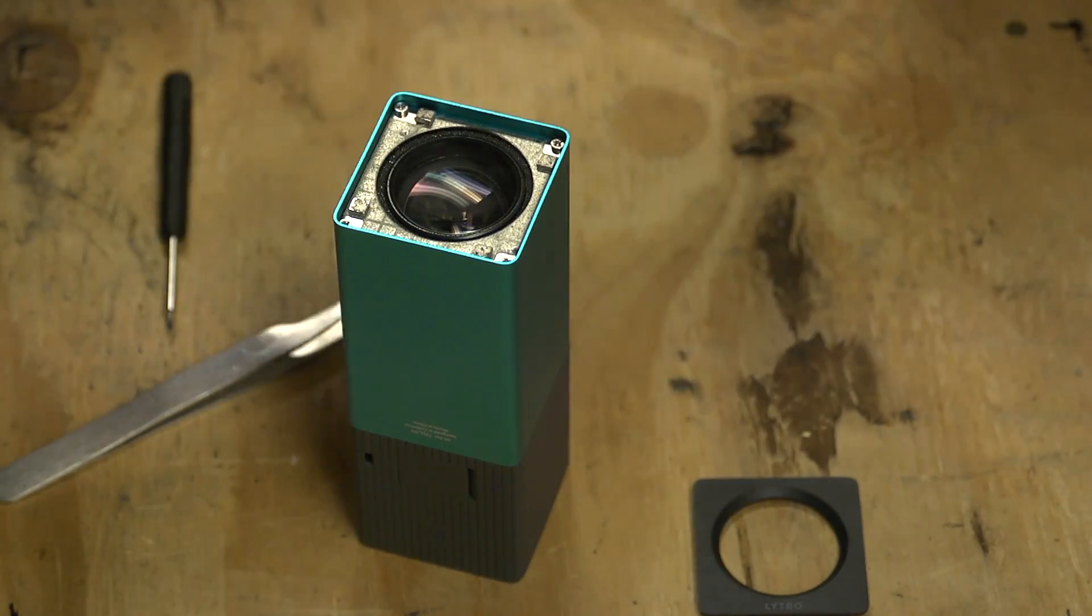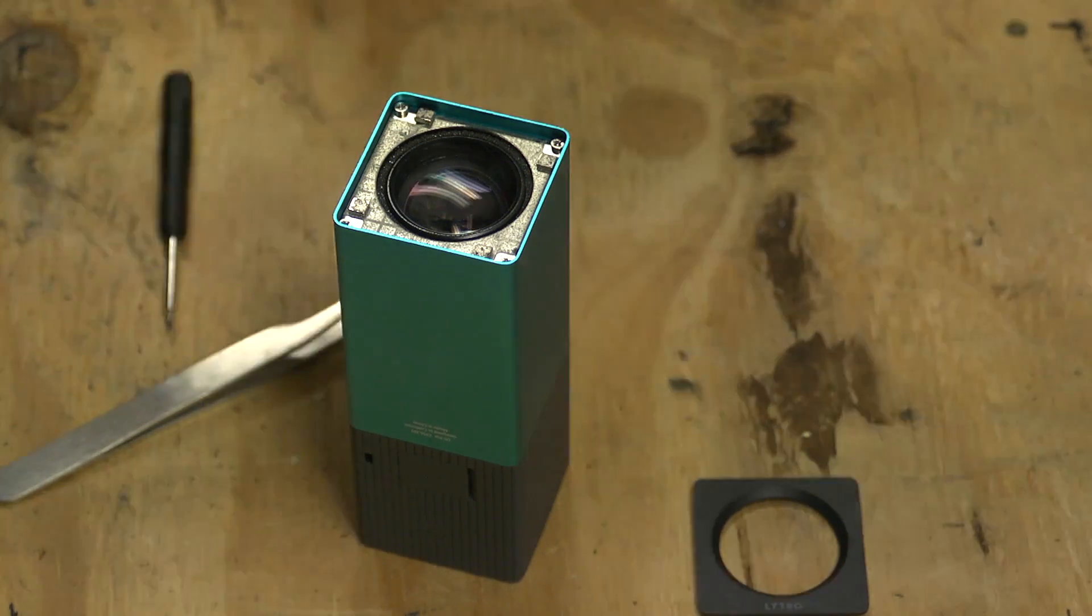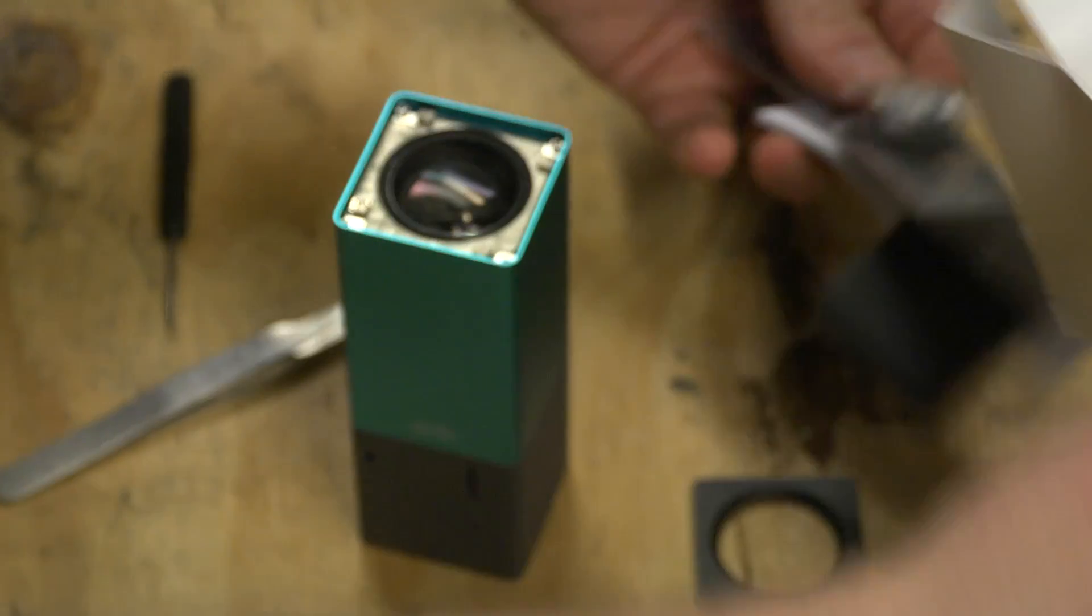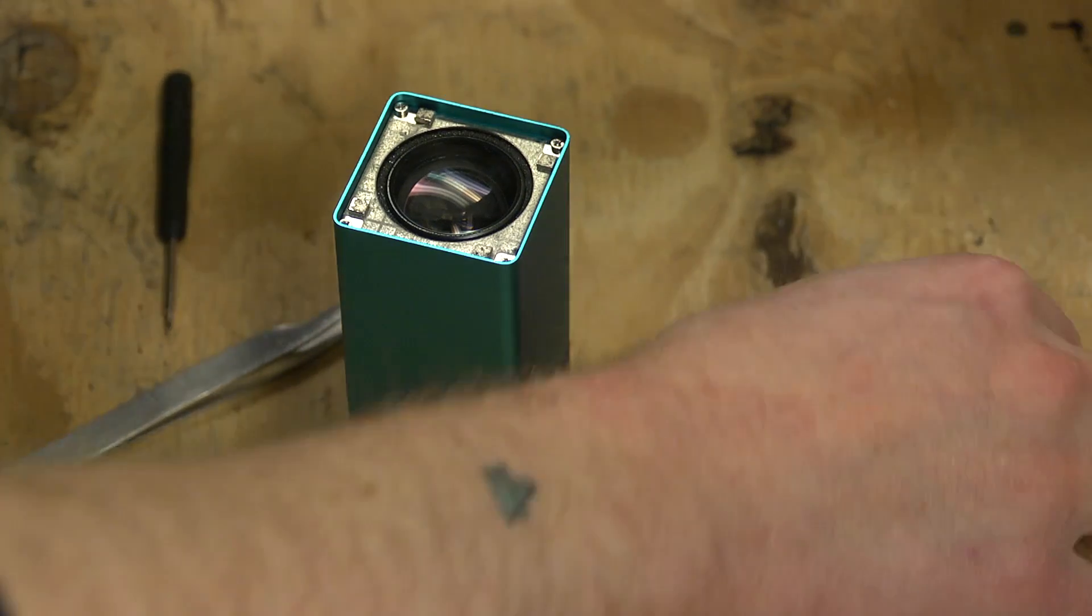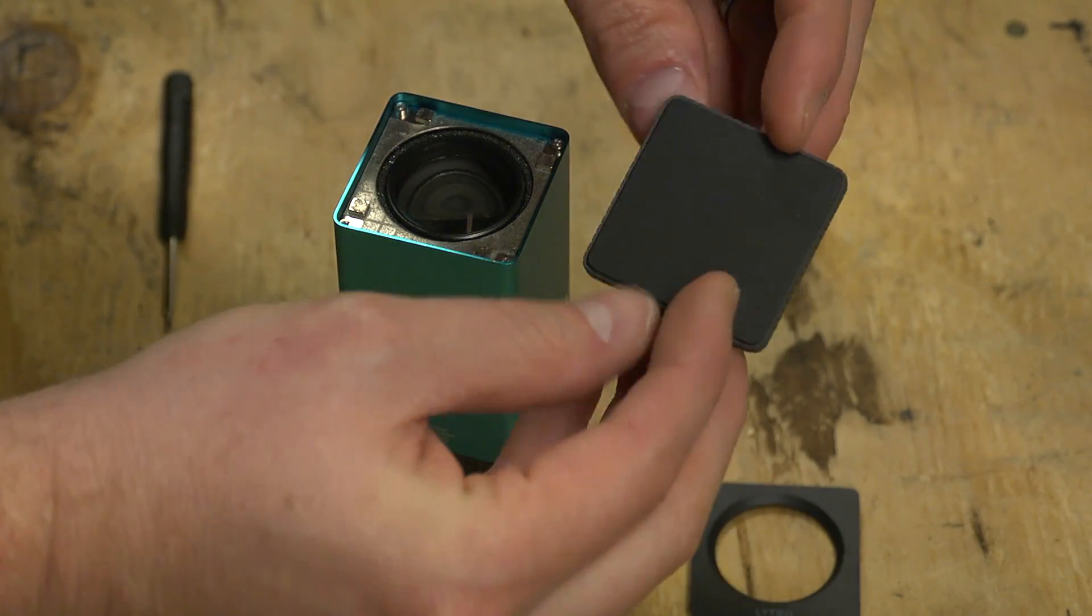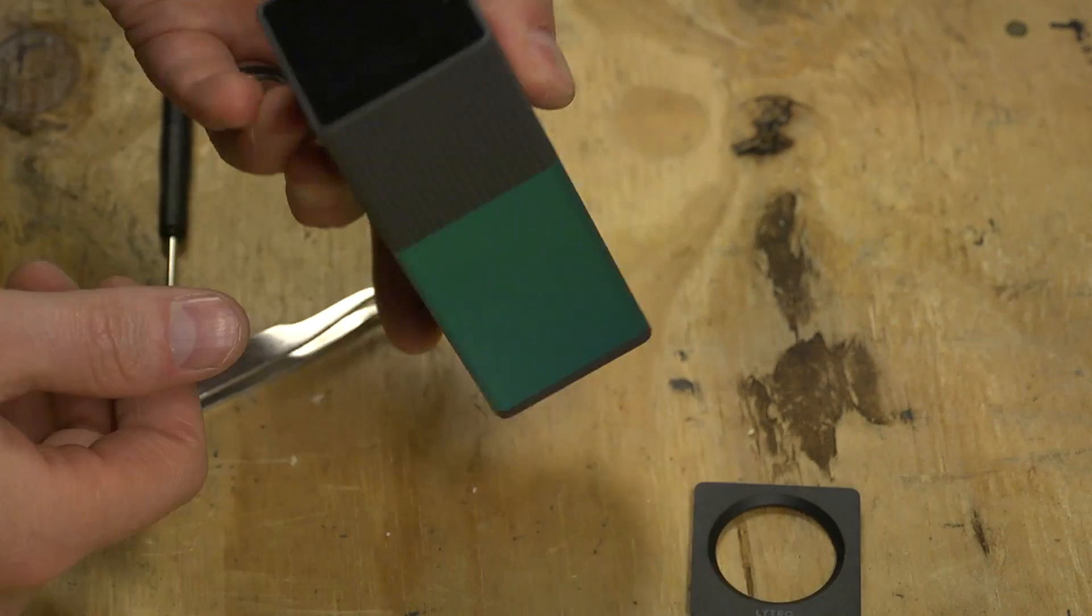One thing I'll point out real quick is the Lytro comes with probably the most brilliant lens cover ever made. It's magnetic. It's brilliant.